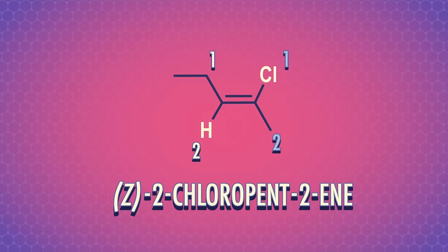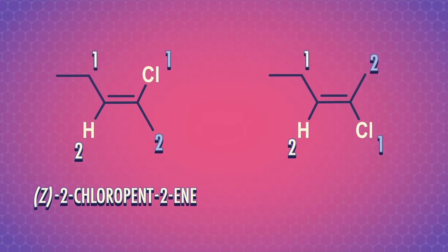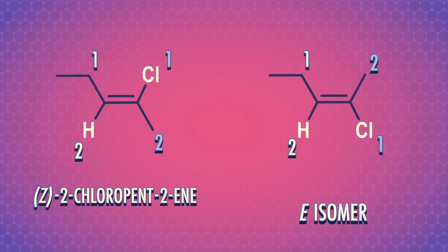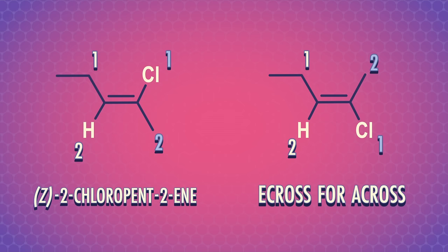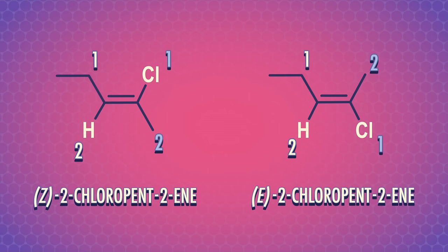So we have Z-2-chloropentene. The other isomer of 2-chloropentene has high priority groups on opposite sides with respect to the double bonded carbon atoms. So this is the E isomer, derived from the German word 'entgegen,' or opposite. I remember it as E for a cross. So it's E-2-chloropentene.